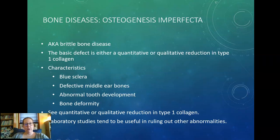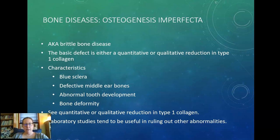Osteogenesis imperfecta is also known as brittle bone disease. The basic defect is either a quantitative or qualitative reduction in type 1 collagen. Collagen is part of the structure of bones — a matrix of collagen with hydroxyapatite and crystallized calcium and phosphorus. Characteristics include a blue sclera, defective middle ear bones causing hearing problems, abnormal tooth development, and bone deformities. Lab studies are usually useful only in ruling out other abnormalities.